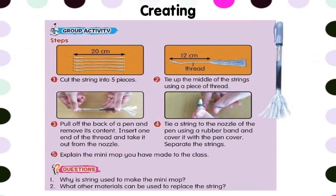Now, let's read together the steps on how to make your mini-mob. There are 5 steps here. Step number 1: cut the string into 5 pieces. Each string has a length of 20 cm.